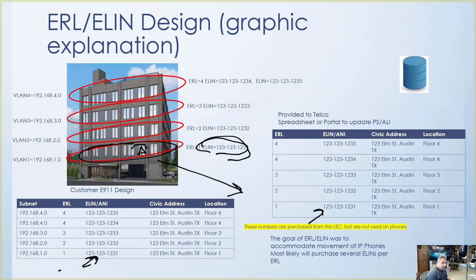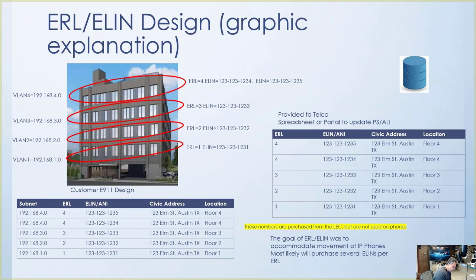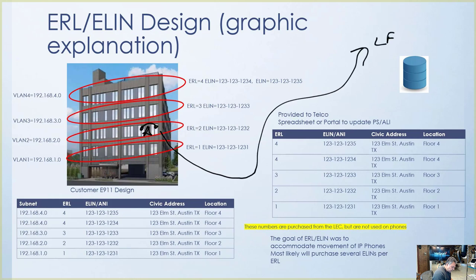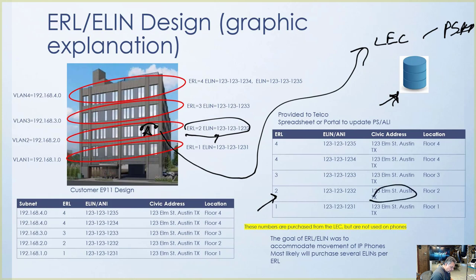This design accommodates movement. If a phone moves to a different floor, the call control on-prem detects it's on a different subnet and changes the call ID to that floor's ELIN. When the call reaches the PSAP and the ALI database is queried, it returns the correct address — 123 Elm Street, Austin, Texas, Floor 2 — based on the updated ELIN. That's what ERL and ELIN design is all about — using one number to represent all phones in an Emergency Response Location.